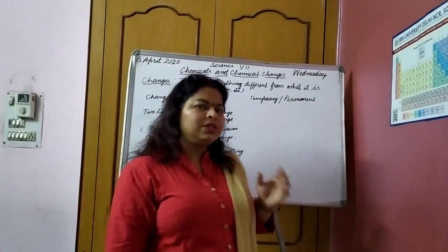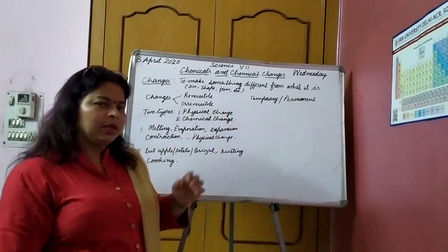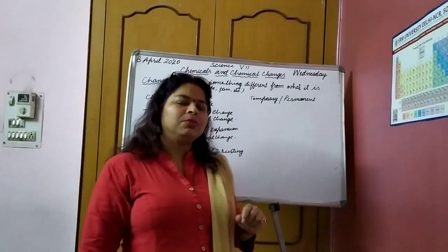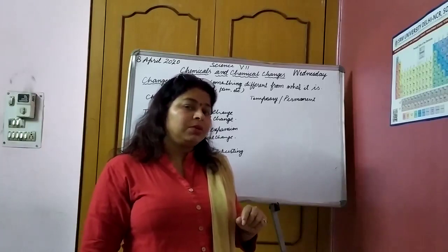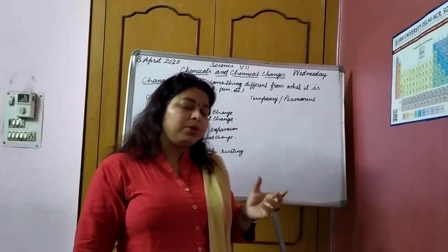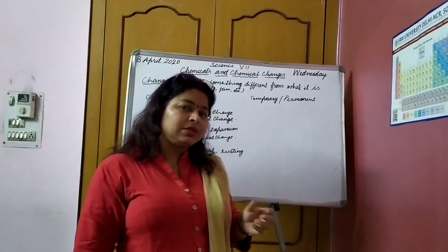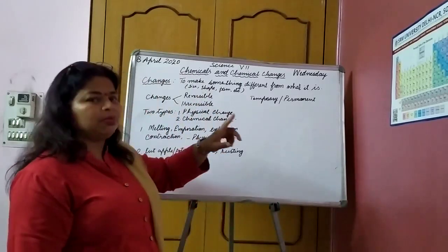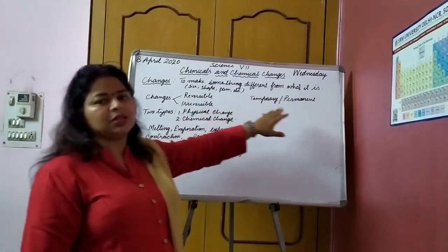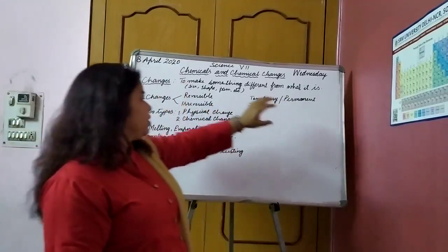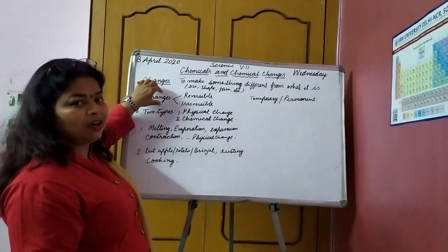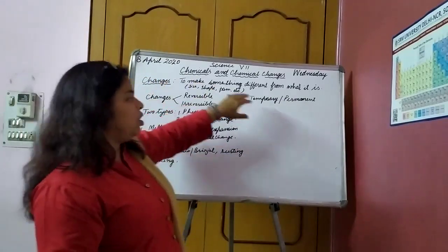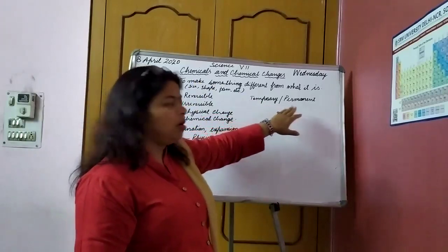Same way, food is being cooked — like potato or vegetables made in your kitchen. Once your mother has made the vegetable, can you bring that potato or tomato back to its original condition? No. So such type of change is again irreversible as well as a permanent change. So now what we have learnt is that changes are of two types: reversible or irreversible, and they can be temporary or permanent.